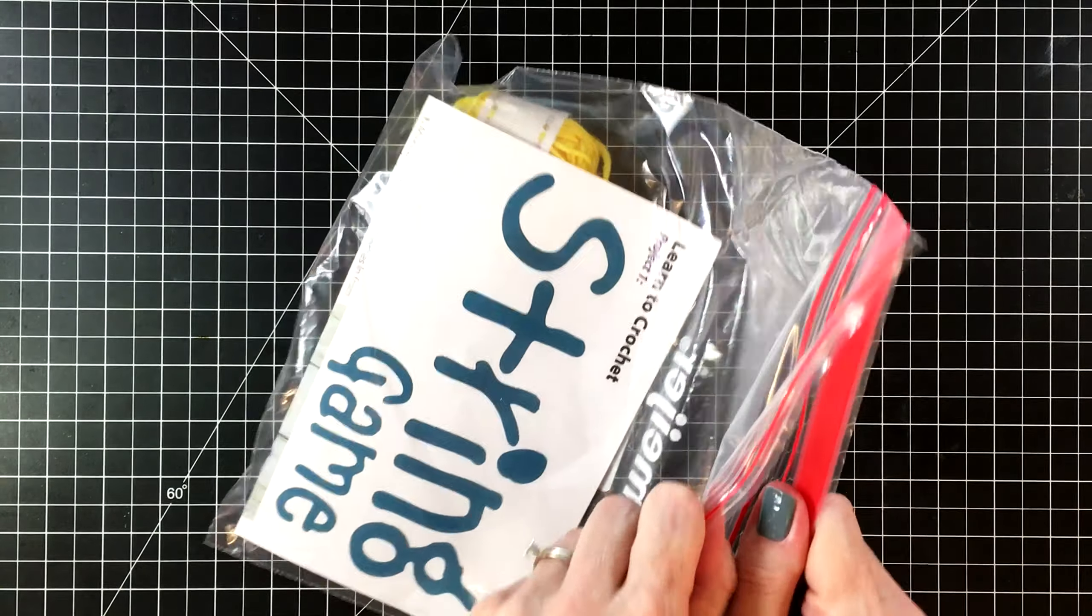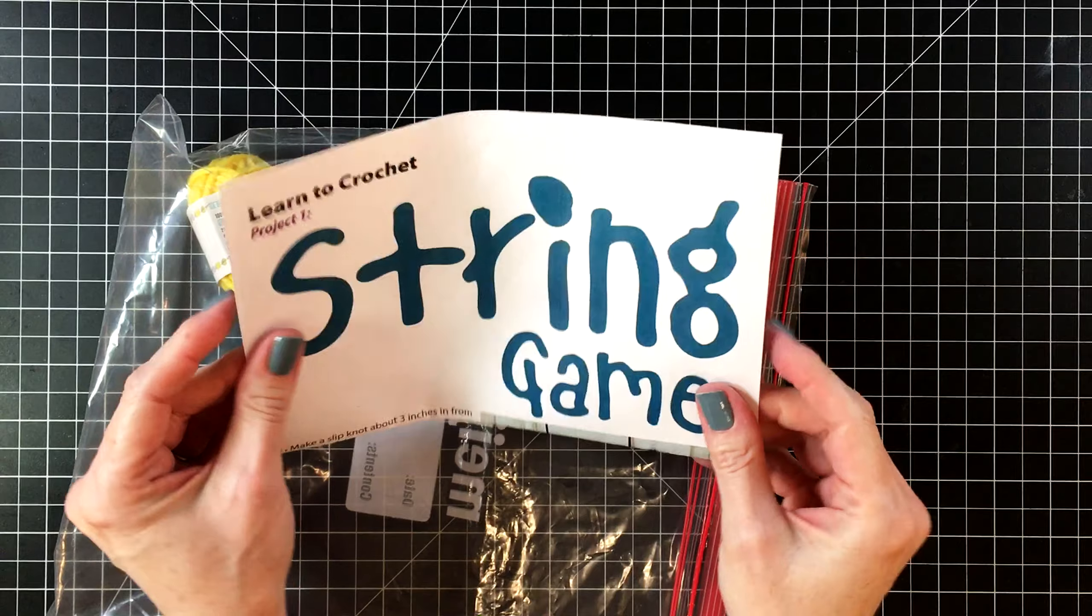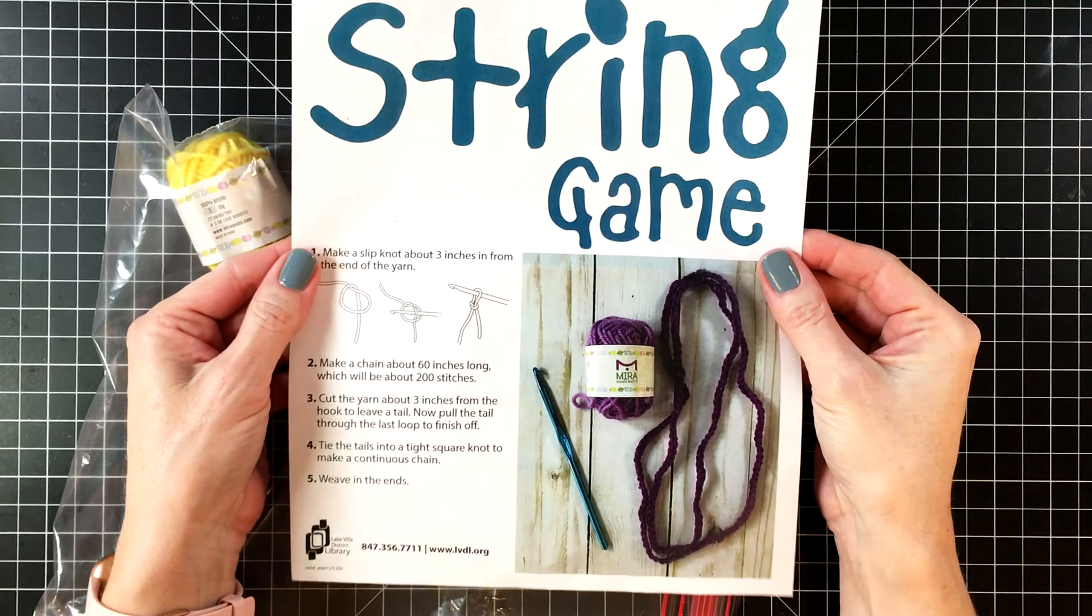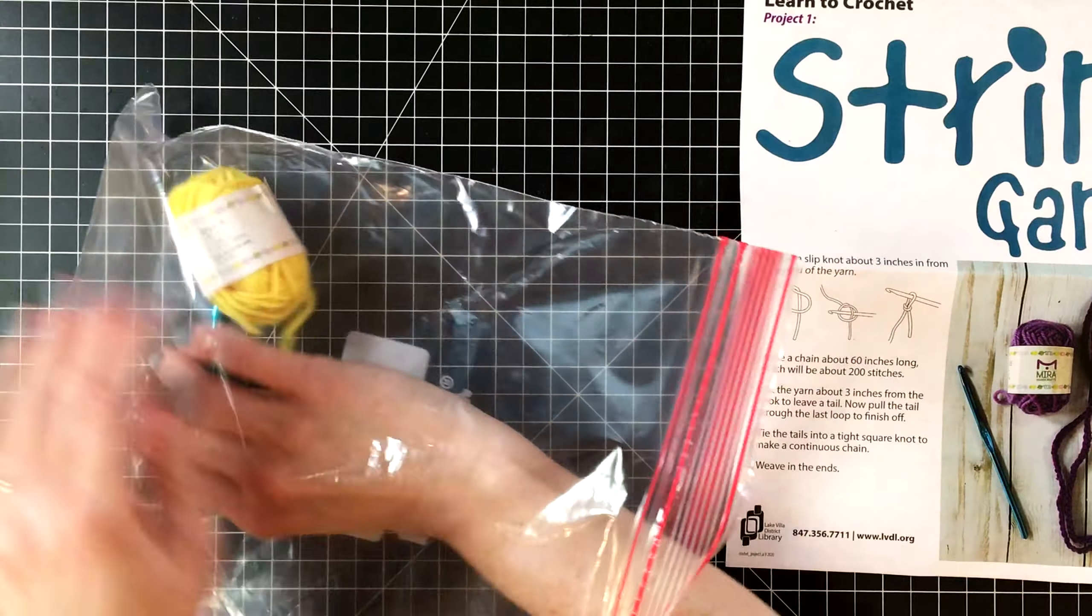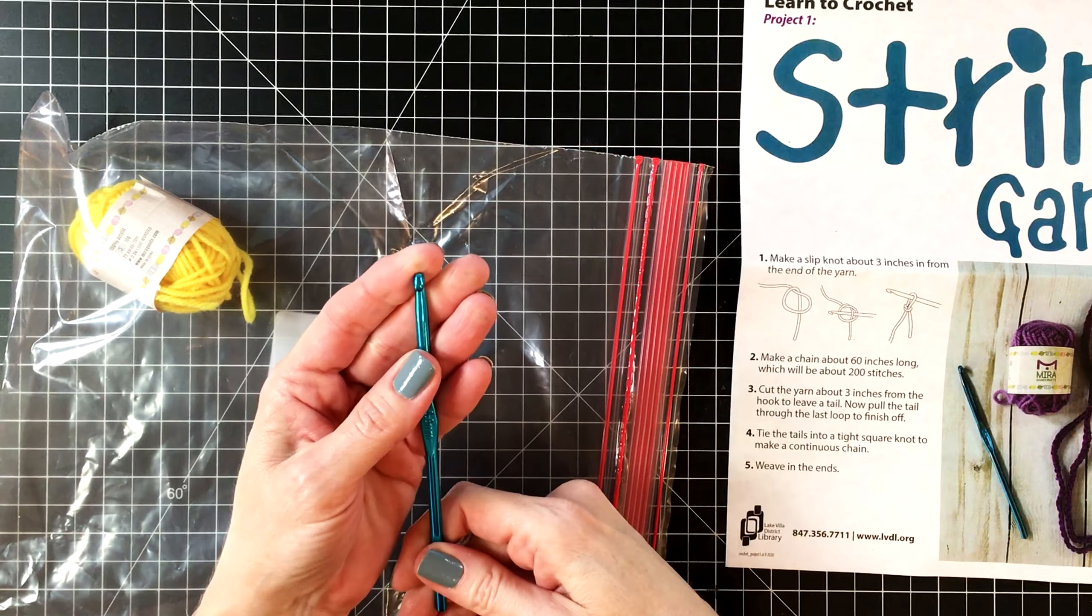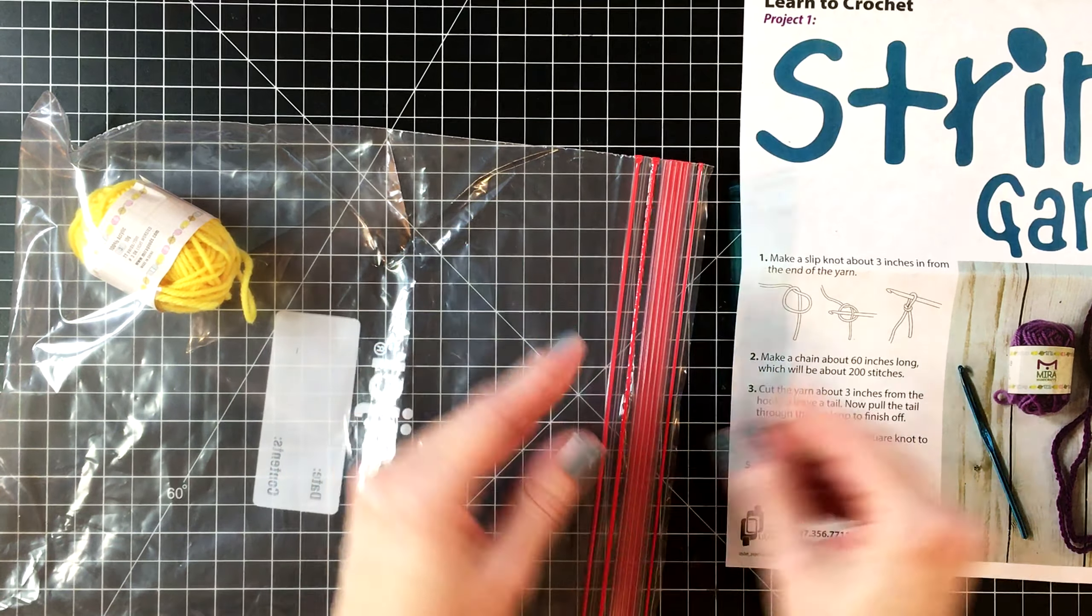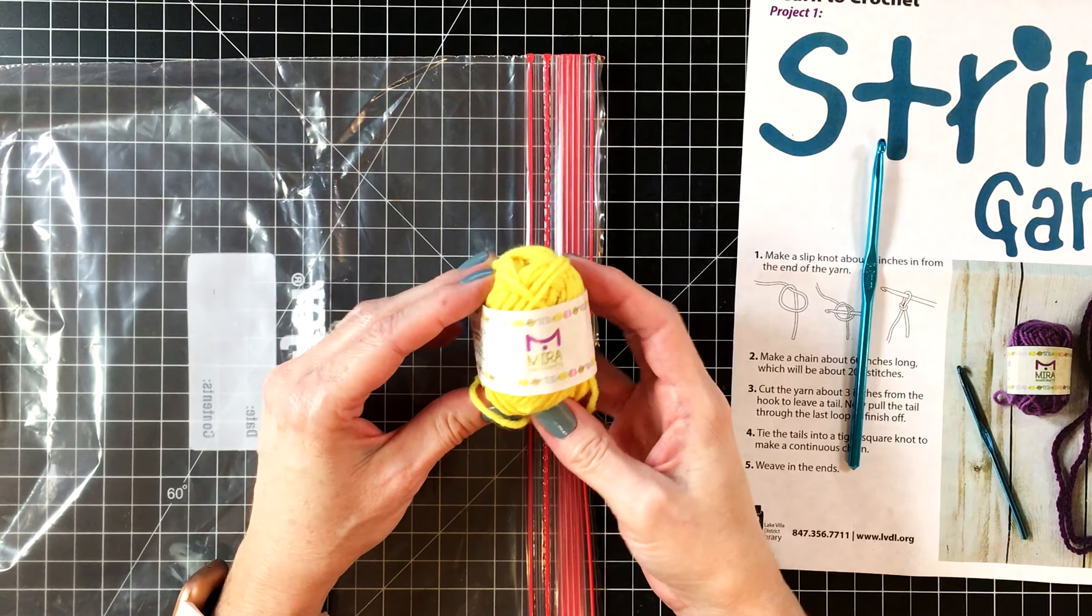Now let's get into lesson number one. Inside lesson number one, you'll have the pattern. This lesson is pretty simple. I'm just going to teach you how to get started in crochet. You'll also get a crochet hook. These come in different sizes. This one is a five millimeter and it's perfect for beginners because it's not too big and it's not too small. And you'll also get a small skein of yarn.